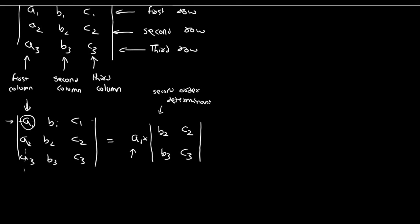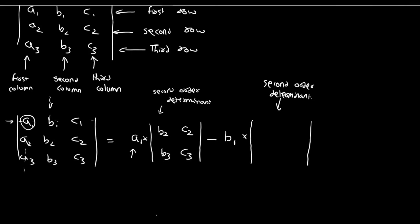Second, subtract the second element of the first row, which is B1, and multiply it with another second order determinant. We exclude the second column and the first row in which that element is present. The remaining elements are A2, A3, C2, C3.